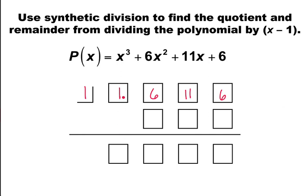Start by dropping the first term, 1 goes here, and then we multiply this by this, which is a product of 1, and place it here. We then add these terms to get 7, and we once again multiply it by this term, 1 times 7 is 7, and place the product here.